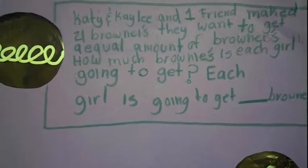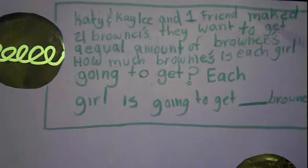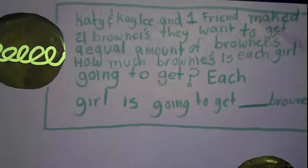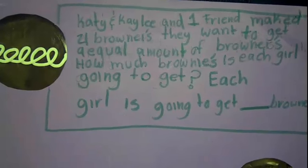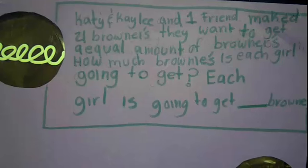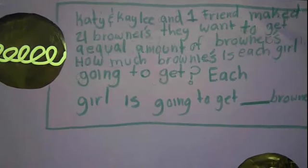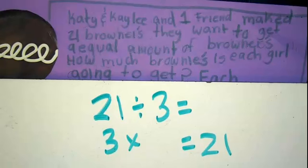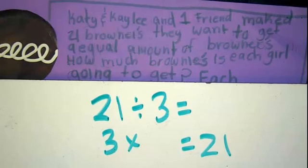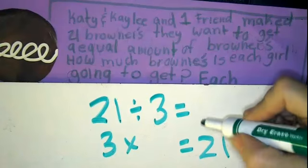Let's see — there are three girls, right? Kate, Kaylee, and one friend. That's three girls, and they're sharing 21 brownies evenly. How much is each girl going to get? 21 divided by three. Well, this is another fact family one. 21 divided by three equals blank.